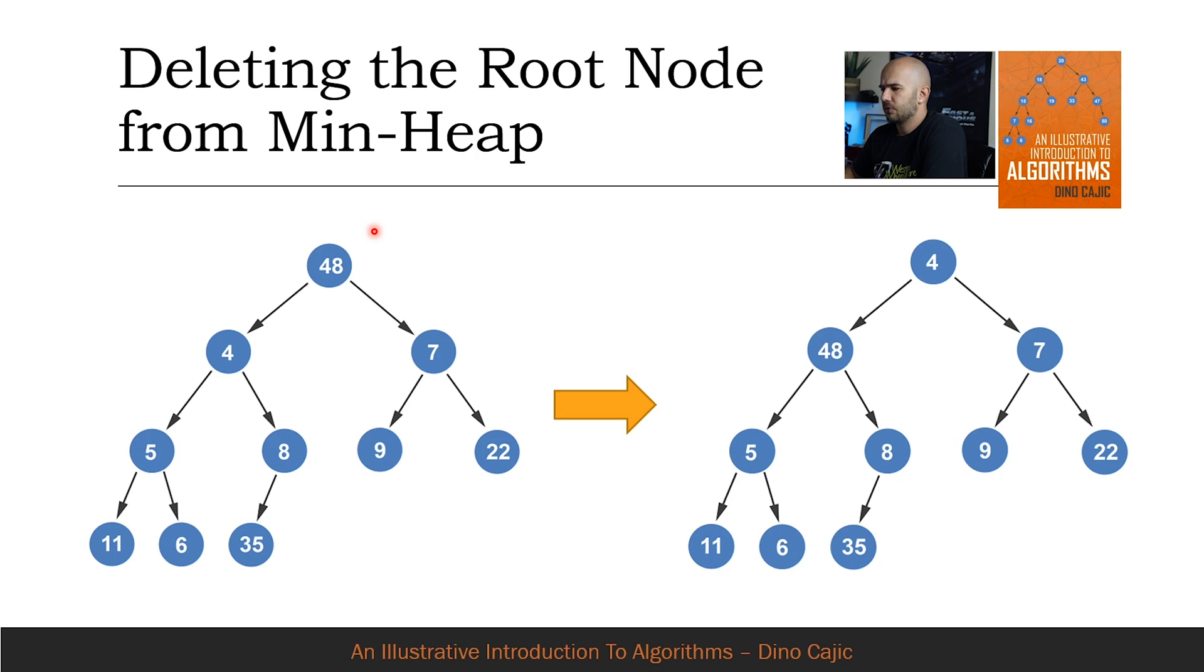We'll follow the same approach as we did in the constructing minheap from a tree video. A comparison is made between the two children, 4 and 7, and the smallest value is chosen. Since 4 is smaller than 48, they swap positions.